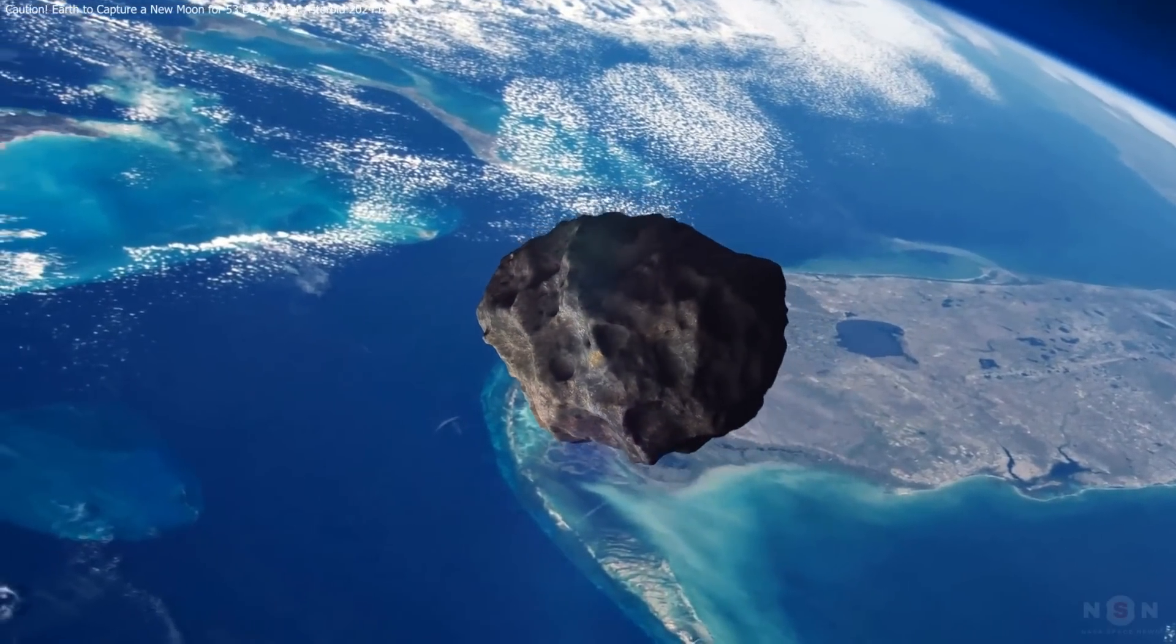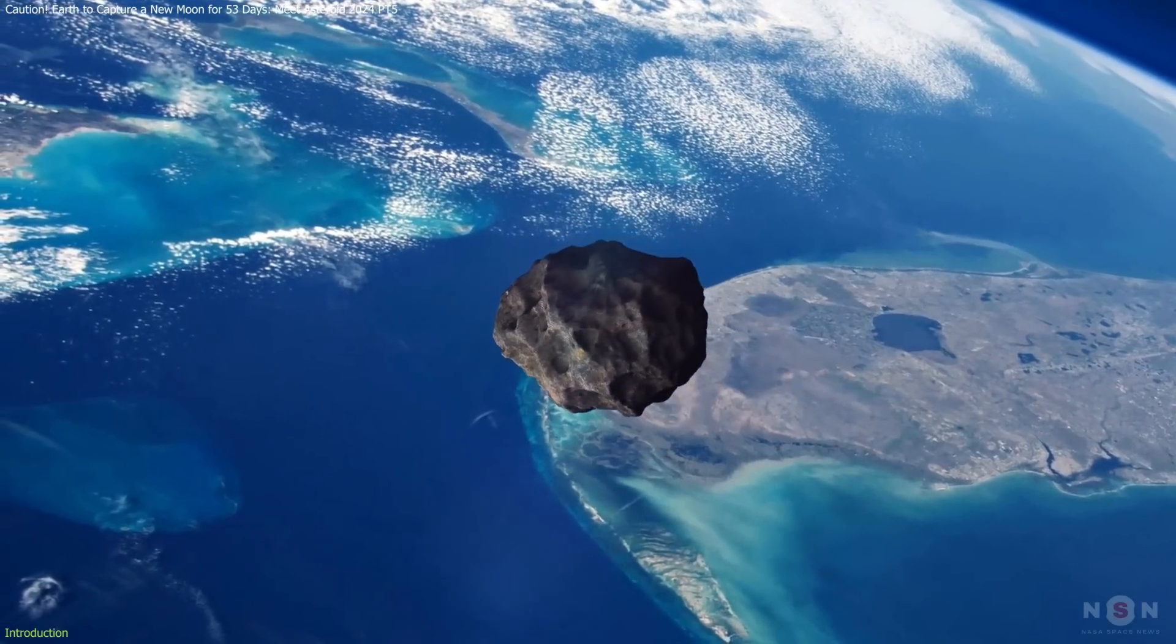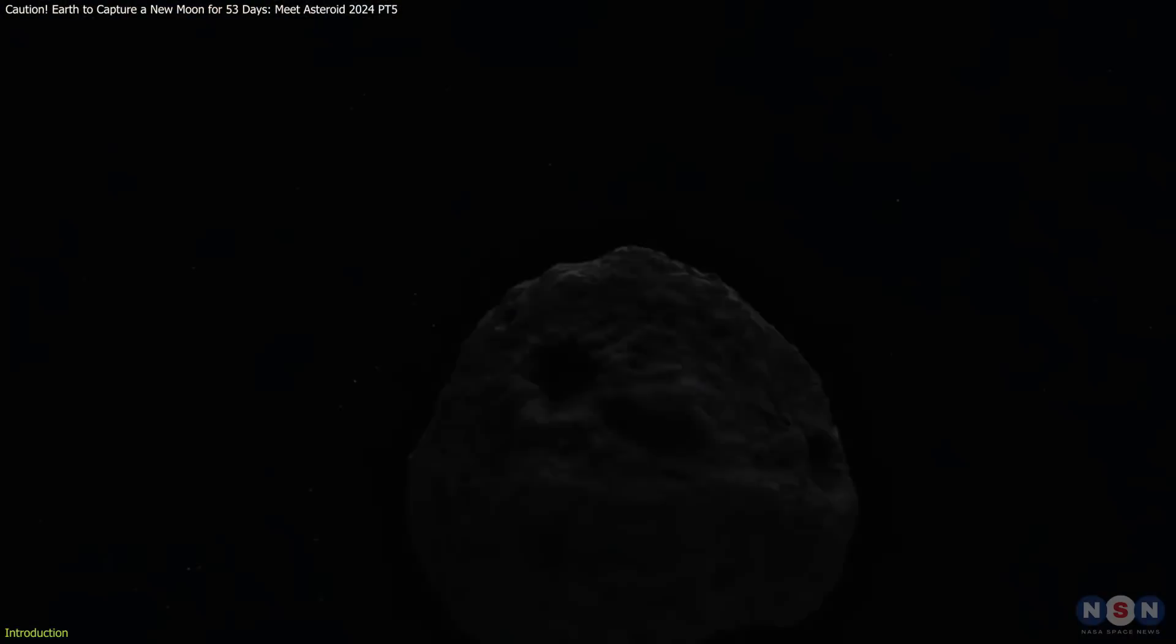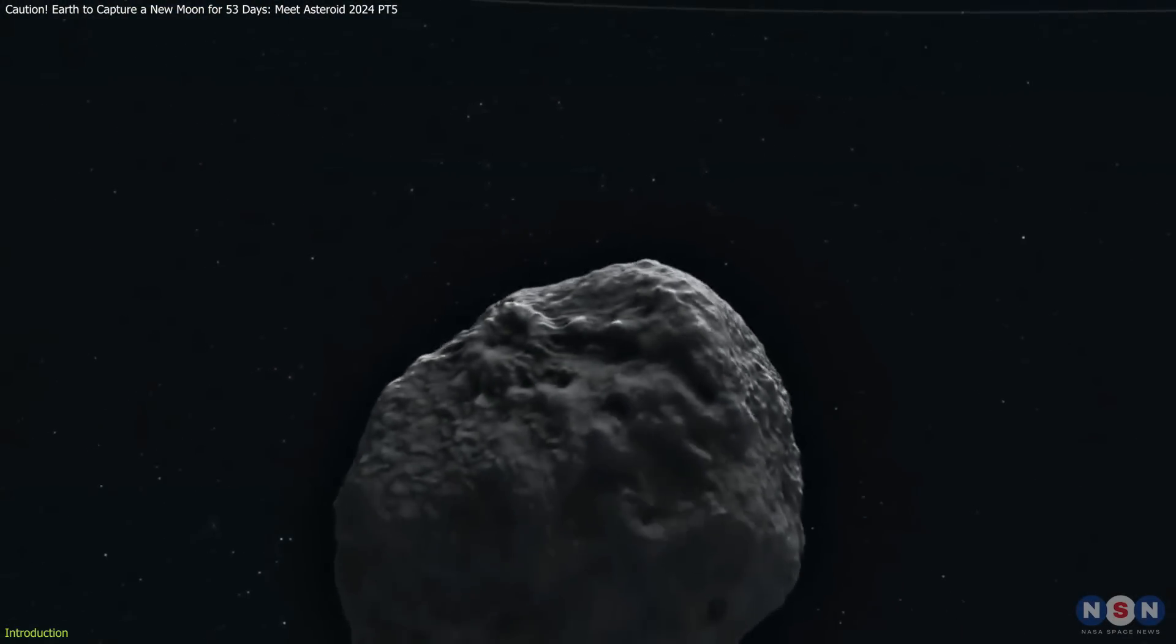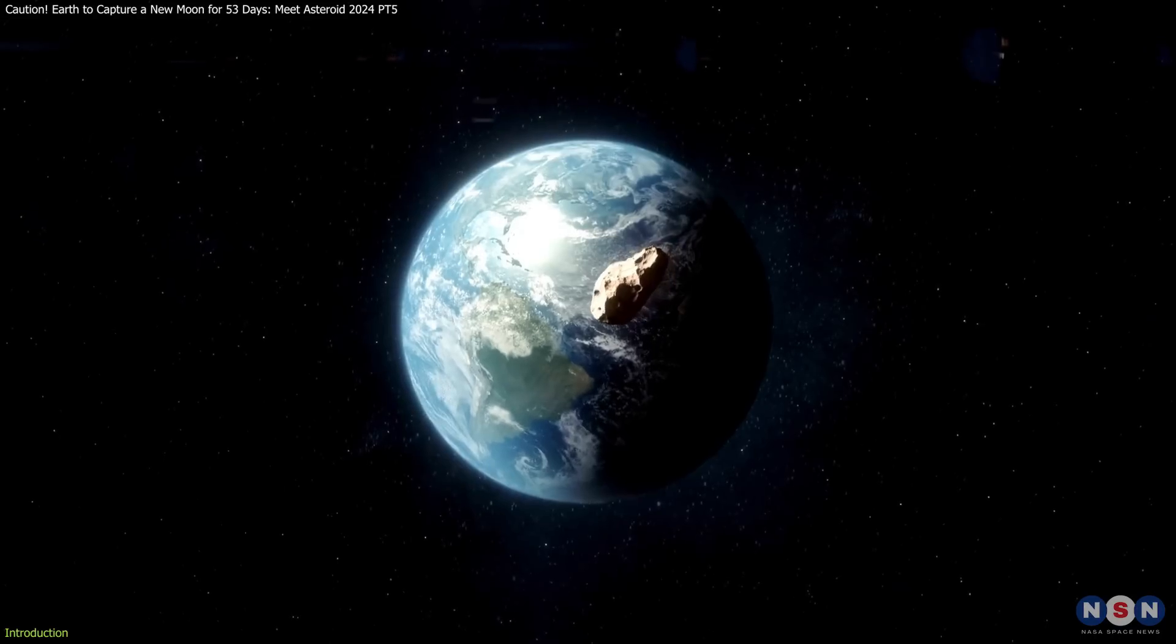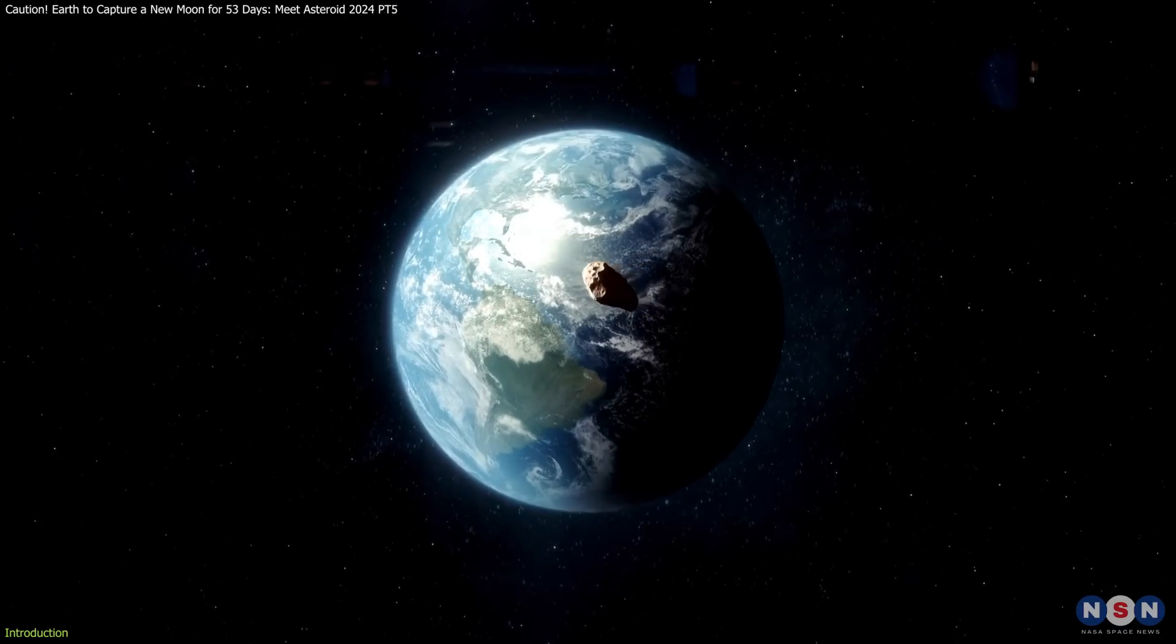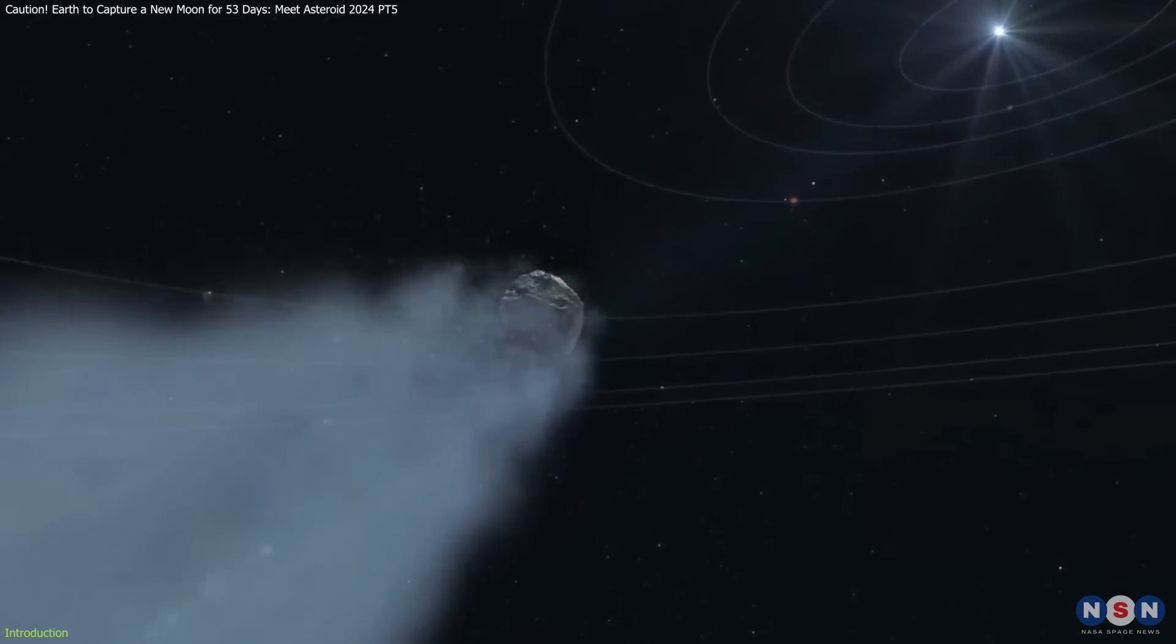Earth is about to have a new visitor in its cosmic neighborhood, but this isn't a typical flyby. Imagine a small rock, roughly the size of a house, hitching a ride around Earth for a couple of months before waving goodbye and continuing its journey around the Sun.